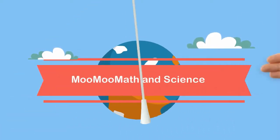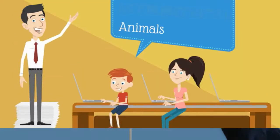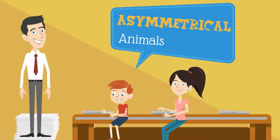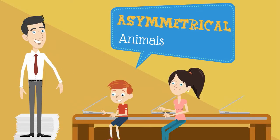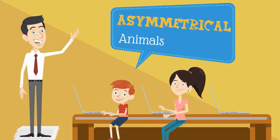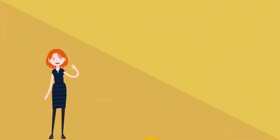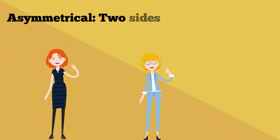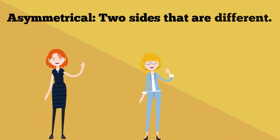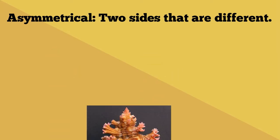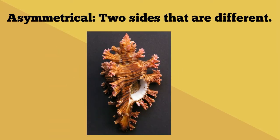Welcome to MooMath and Science. In this video I would like to talk about animals that are asymmetrical. Asymmetrical animals have two sides that are different in some way. Asymmetrical animals are irregular and not mirror images.